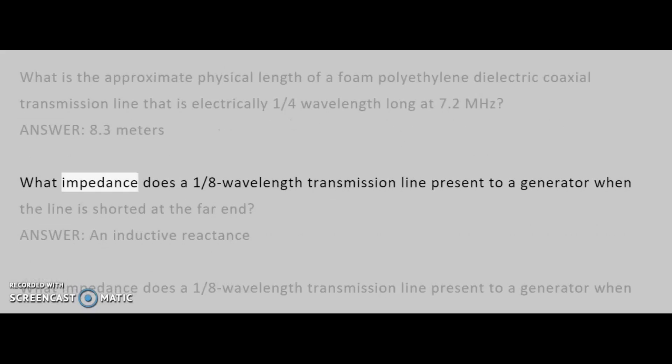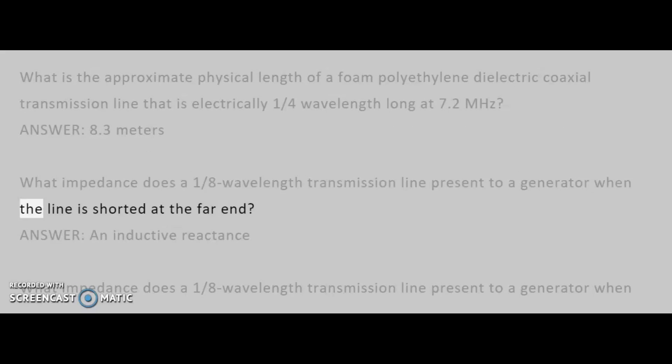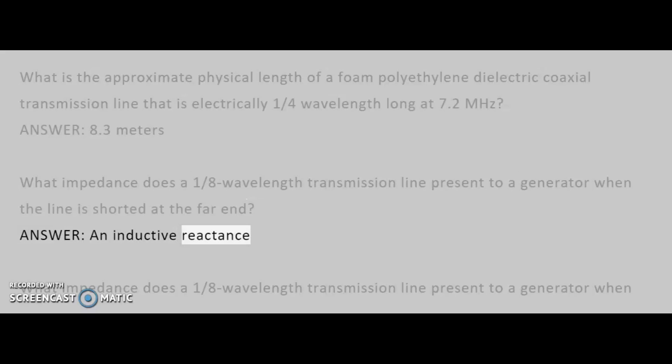What impedance does a one-eighth wavelength transmission line present to a generator when the line is shorted at the far end? Answer: An inductive reactance.